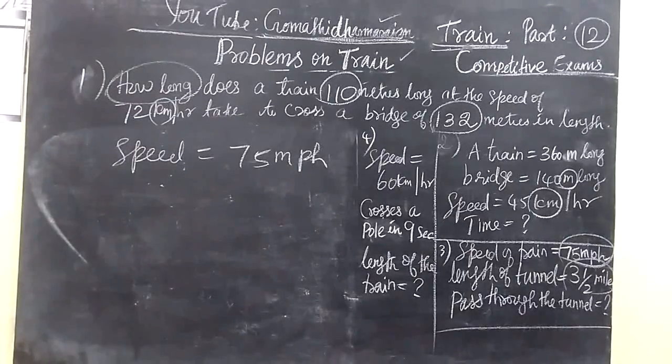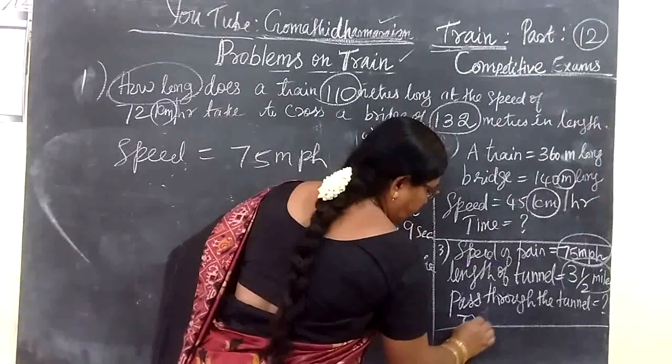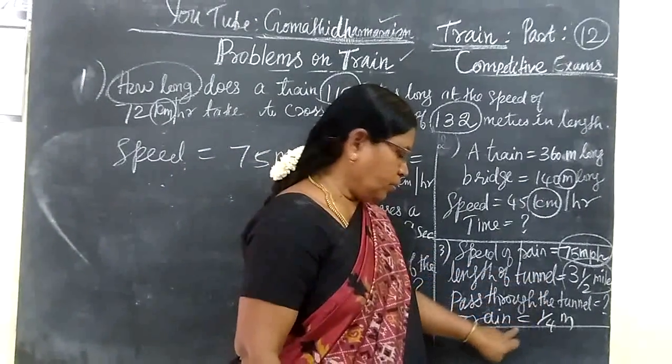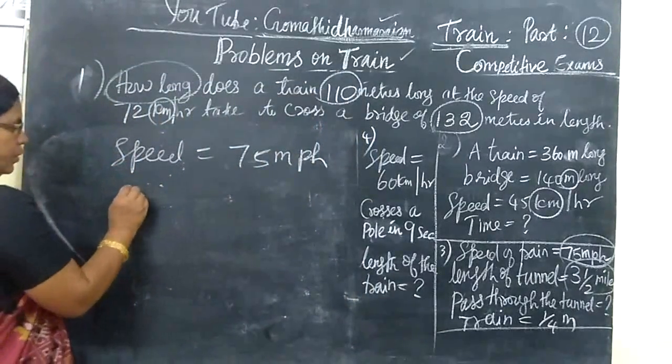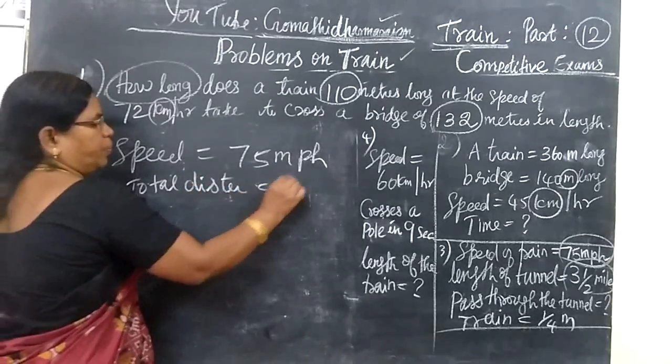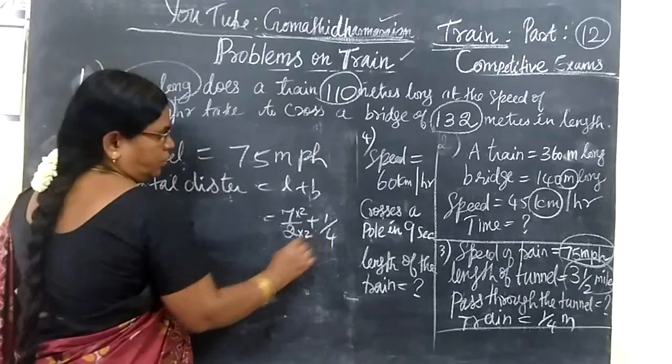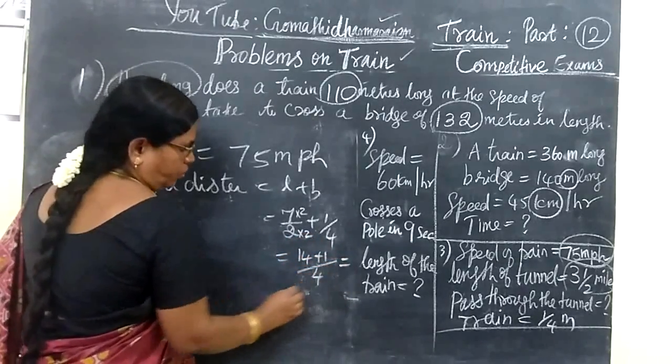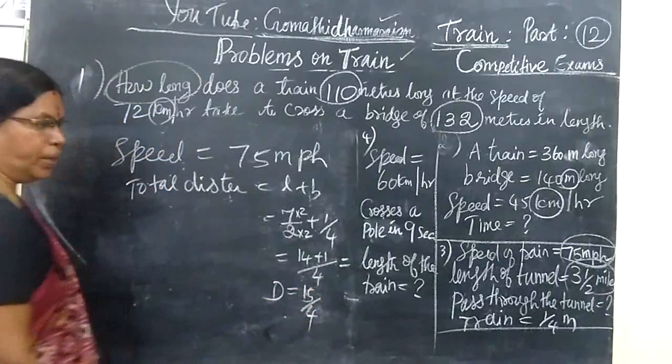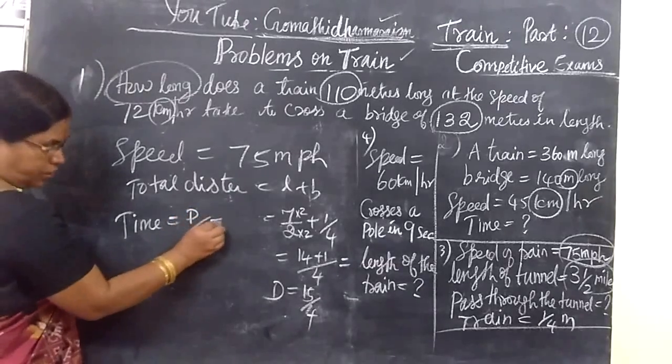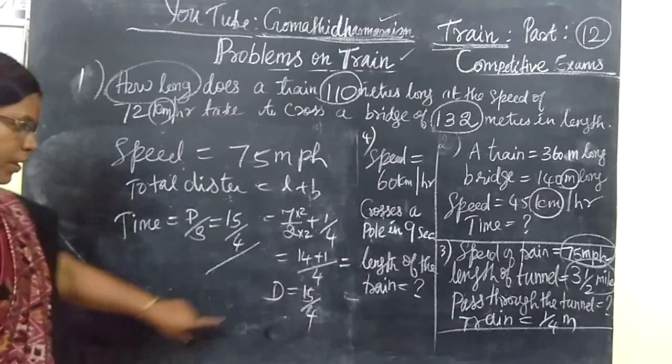So 3 and 1 by 2 miles. And it is given the train is 1 by 4 miles, length of the train. Then the length of the total distance we can find: length of the tunnel plus length of the train. So you find that total distance equals M plus B. This is equal to 14 by 4 plus 1 by 4. This is 14 plus 1 by 4, which equals 15 by 4. So this is distance to be covered. You want to find the time. Time equals distance by speed. Distance is 15 by 4.